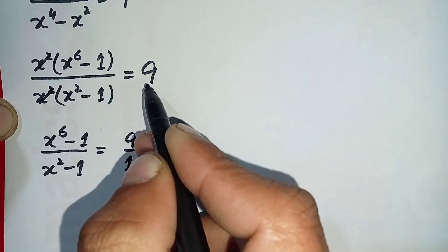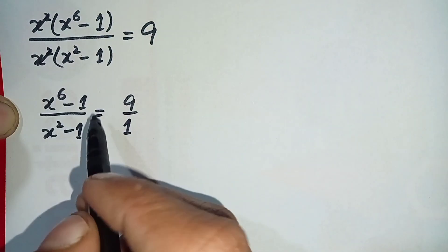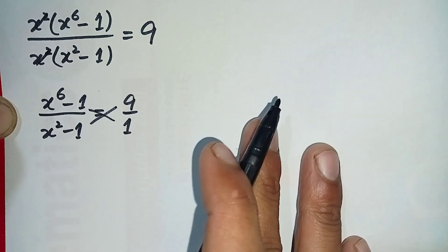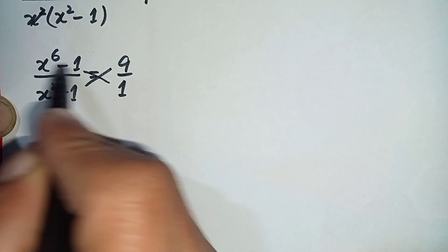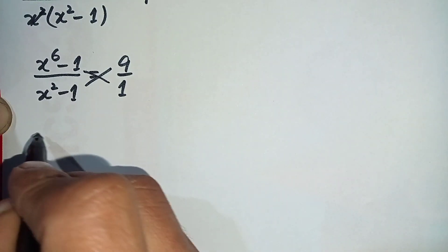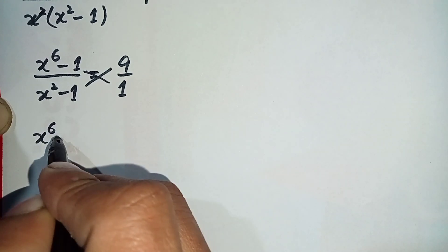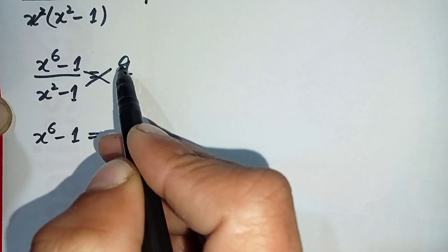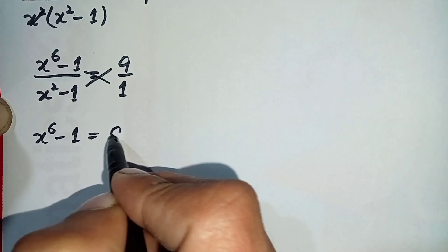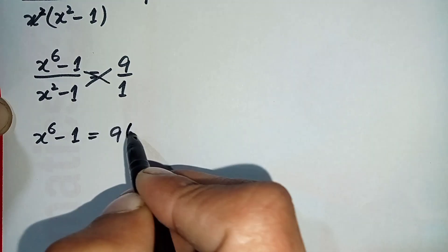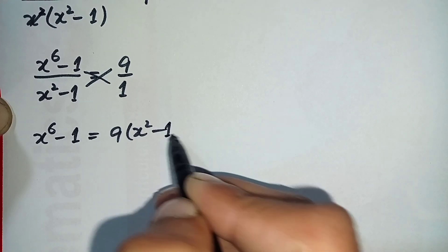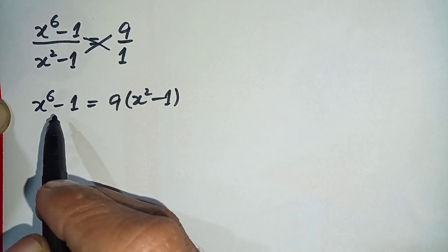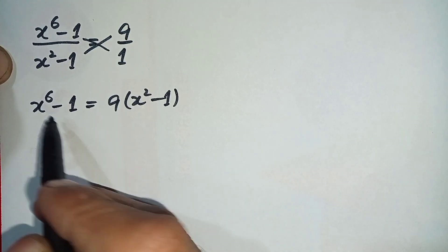We can write 9 as 9 divided by 1, since dividing any number by 1 gives the same number. Now let's cross multiply both expressions. Multiplying 1 with the left expression gives x raised to power 6 minus 1, and multiplying 9 with the denominator expression gives 9 times (x squared minus 1). Now I will factorize the left hand side using a cubic formula.